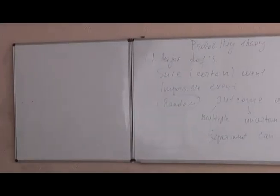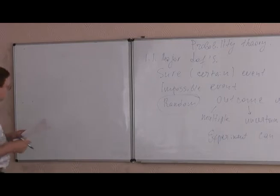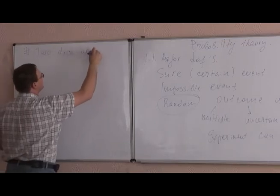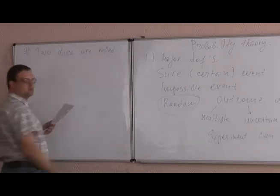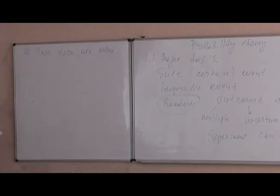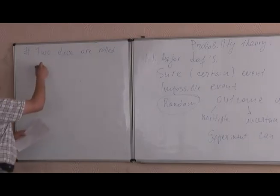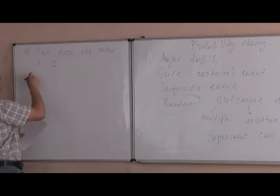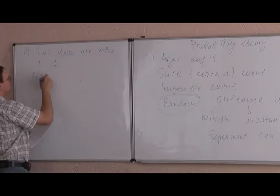In Soviet-era probability books, we usually have problems about colorful balls. In American literature, we usually have problems with dice and coins. So an example looks like this: two dice are rolled. The dice are standard from one to six — because there are some dice where we have from one to three. So we have two standard dice from one to six. What is the probability that the sum is equal to three?